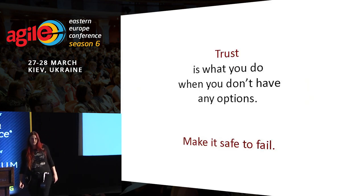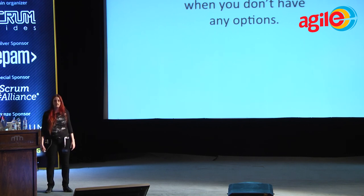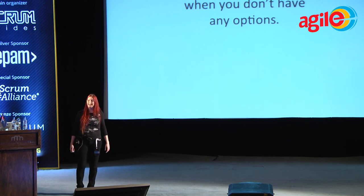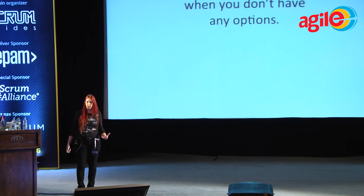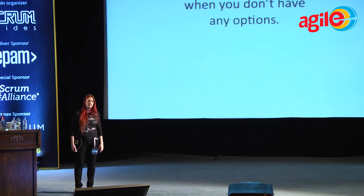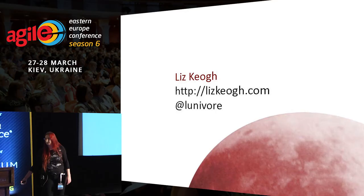Trust is what you do when you don't have any options. And if you're doing it in high uncertainty, it is really dangerous. Lots of people talk about the value of trust — I actually like to use it as a test, to see whether we're coming up with good experiments or not, to see whether we're providing the options. Options in uncertainty are better than blind trust. Make it safe to fail. That's it — thank you very much.